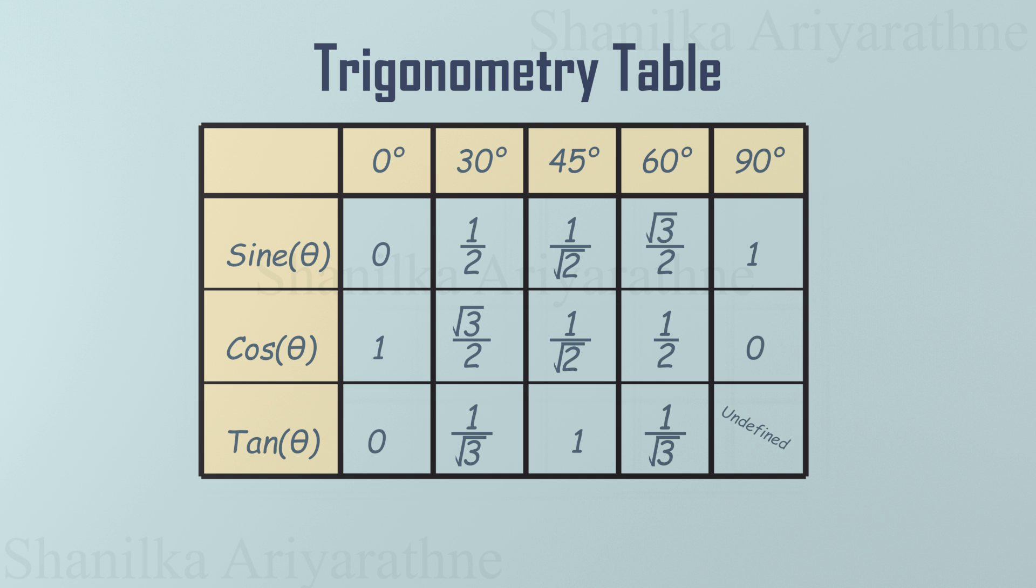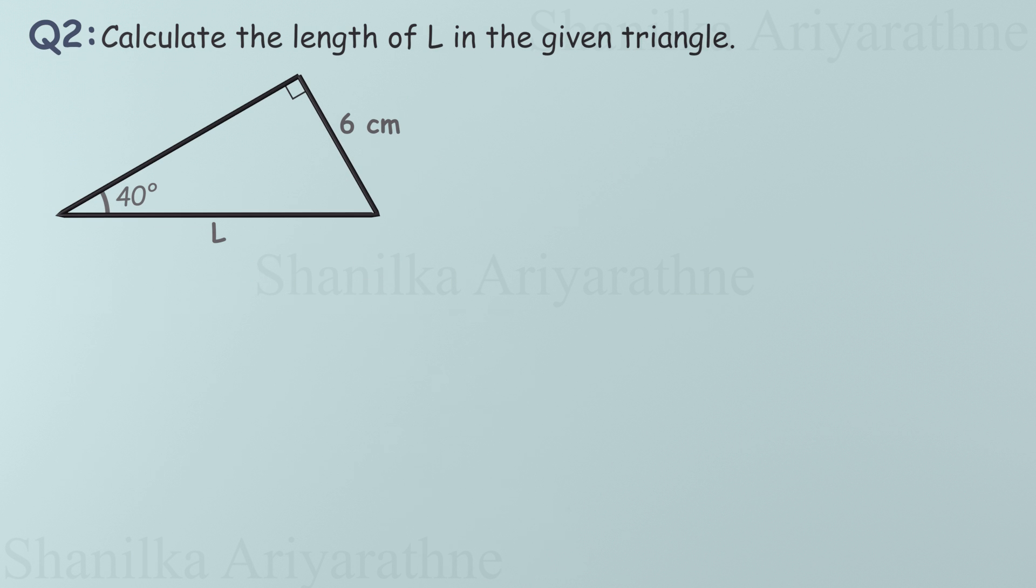Let's do some exercises. We're given a right-angled triangle with an angle of 40 degrees, the opposite side to that angle measuring 6 centimeters, and we need to find the length of the hypotenuse, L. Since we have the opposite side and need the hypotenuse, the perfect ratio to use is sine, because sine connects the opposite side to the hypotenuse. We know sine is opposite side divided by hypotenuse. So sine 40 degrees is 6 divided by L.